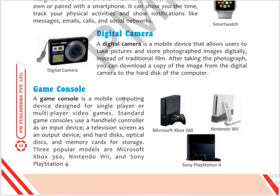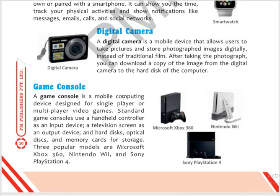A digital camera is a mobile device that allows users to take pictures and store photographic images digitally instead of using traditional film. After taking a photograph, you can download the image from the digital camera to the hard disk of a computer. You can remove the memory card from the camera, attach it to a computer, and download the photos to the hard disk or access them on a phone.